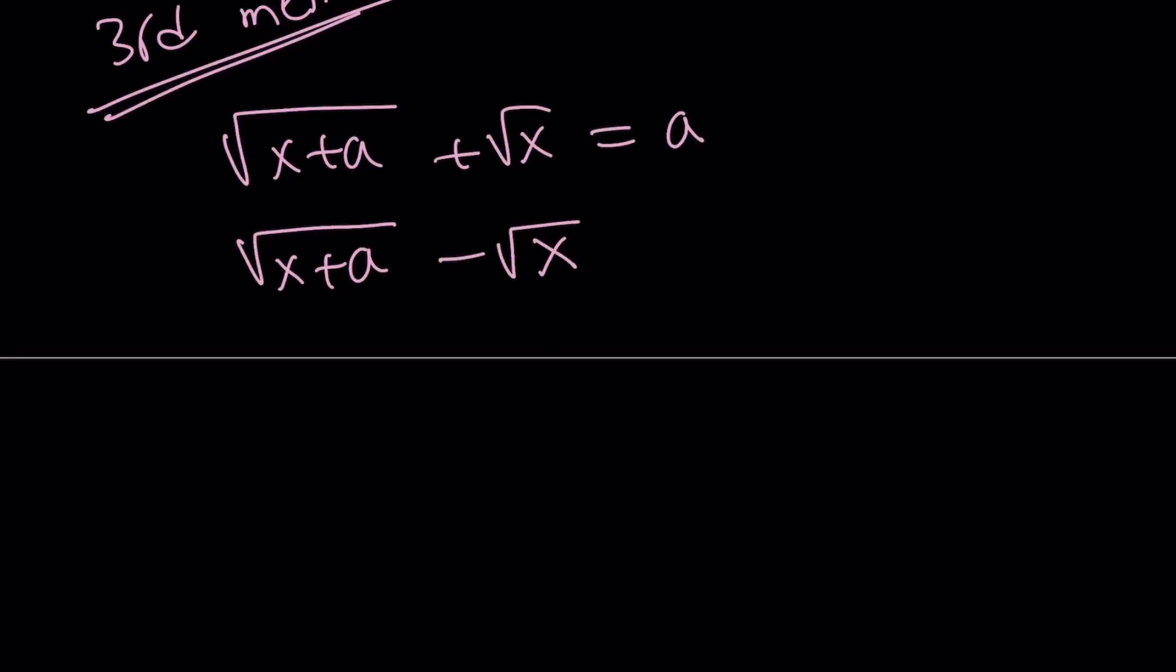Let's take a look at the third method, which is actually the funnest one. The most funnest. So we are given square root of x plus a plus the square root of x equals a. And we're supposed to find the value of square root of x plus a minus the square root of x. Now when you first see this problem, you probably thought about what we're doing right now. Oh, come on. This is so easy. Obvious.